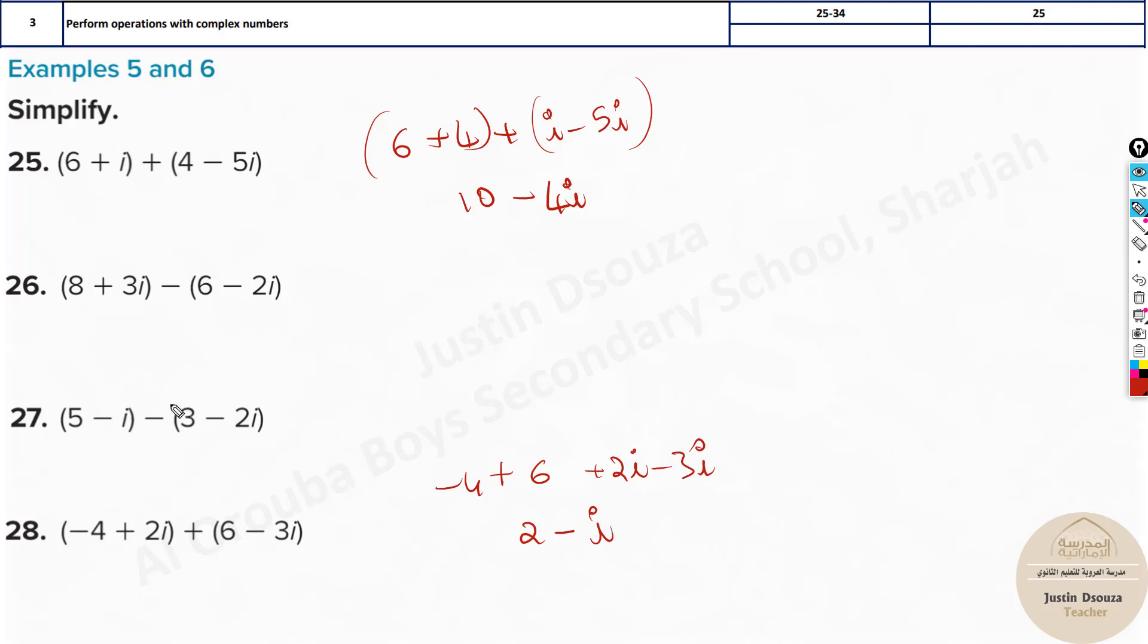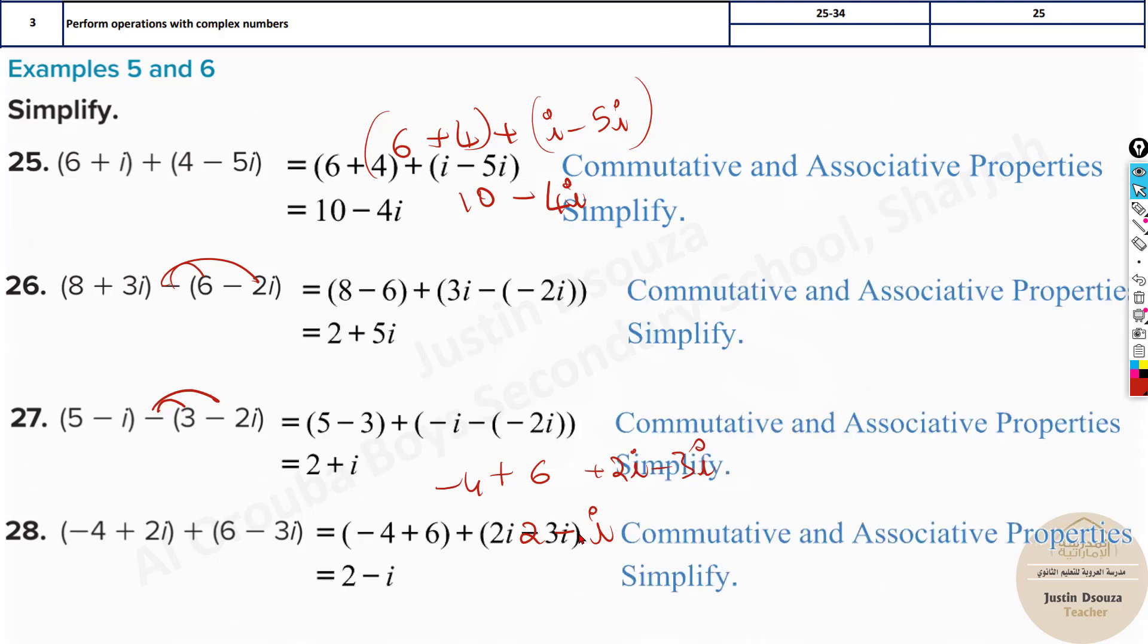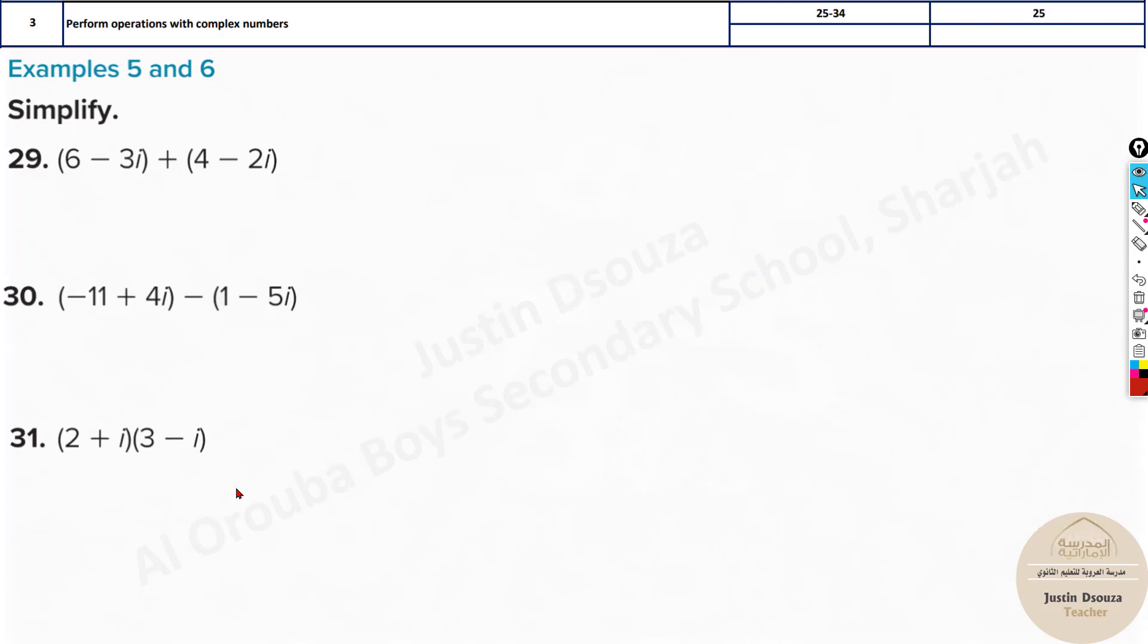When it's minus, make sure you multiply the sign as distributive property and both these terms become minus. Okay, so that's it. The answers are very easy. Simple answers - we have got the same answers.